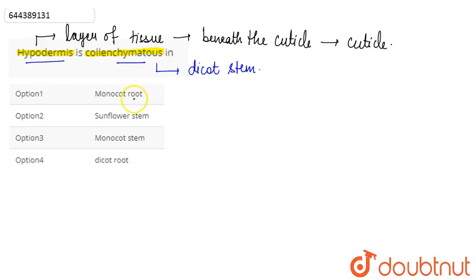Option one is monocot root. In monocot roots, we see sclerenchymatous hypodermis, not collenchymatous. So this option is wrong.